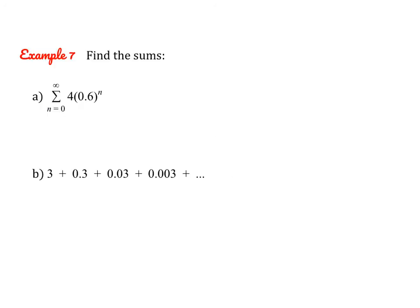The formula is super easy: a sub 1 over 1 minus r. Remember to check your r value to make sure terms are getting closer to 0 — not smaller, because a more negative value would take numbers farther from 0. Let's try the first problem. The r value is 0.6, which falls within the valid range. You might notice n starts at 0 with just n in the exponent, not n minus 1 — those compensate for each other. So a sub 1 is 4, and 4 over 1 minus 0.6 equals 10.